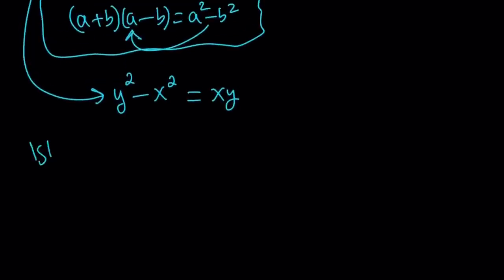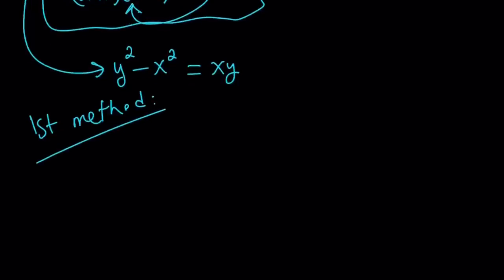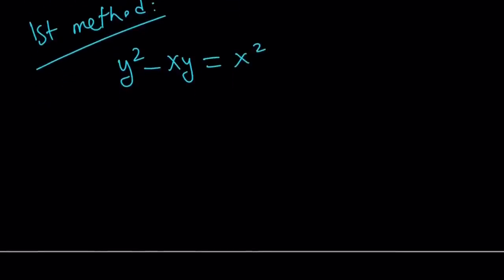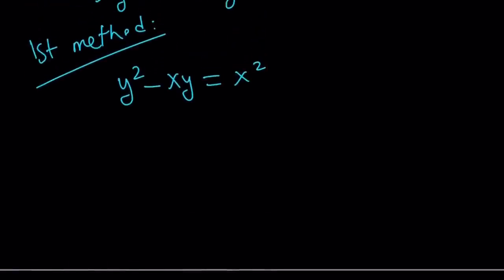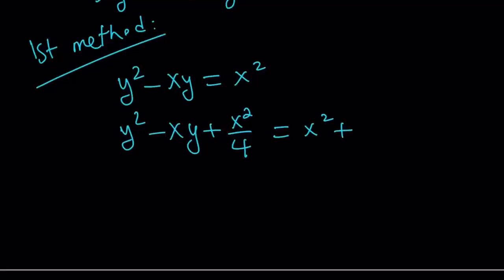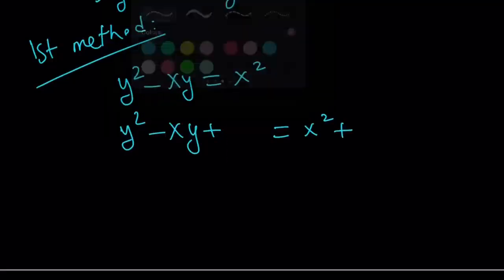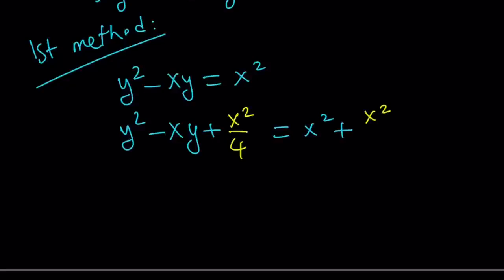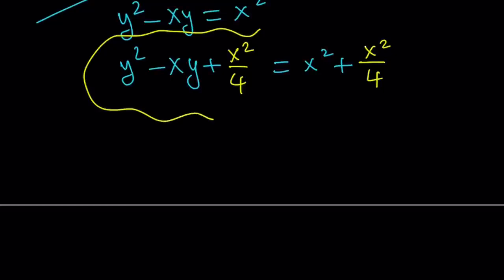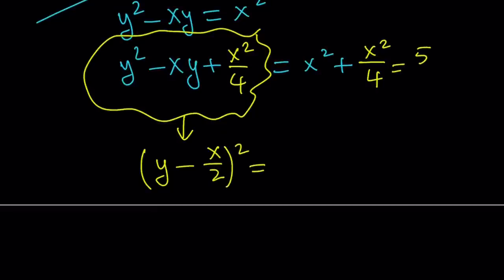For my first method I want to complete the square on this expression. Let's put y squared and xy on the same side: y squared minus xy equals x squared. To complete the square on the left hand side we need to add x squared over 4 to both sides. That completes the square, making it a perfect square, so the left side becomes y minus x over 2, quantity squared. The right side becomes 5x squared over 4.